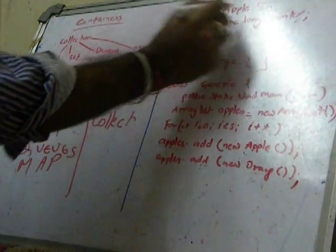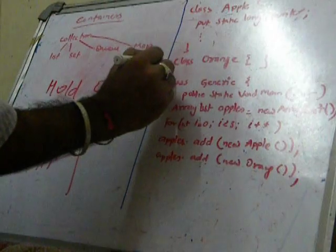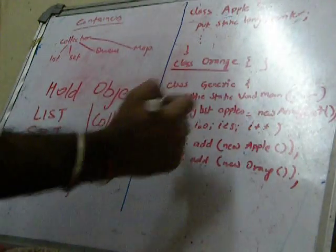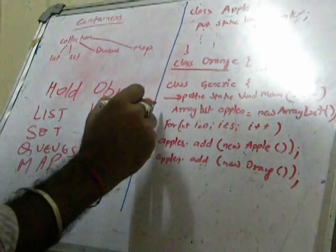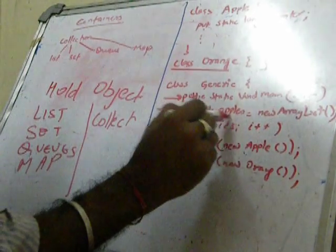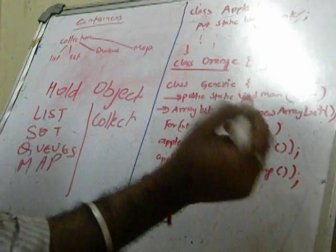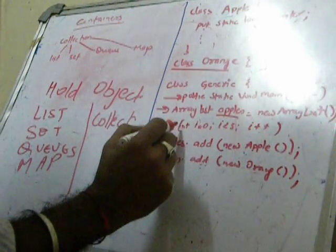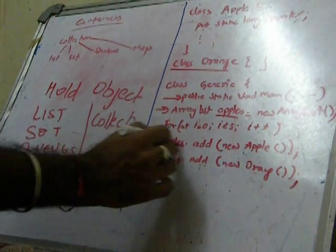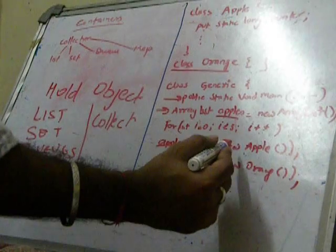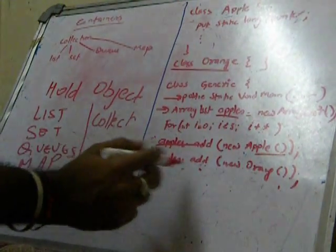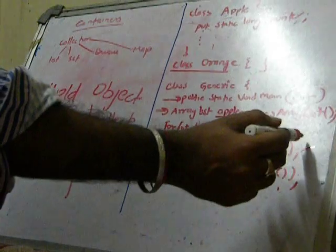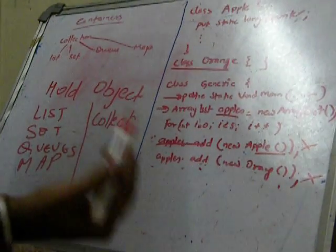I have a class called class Apple with some declarations, then class Orange with no declaration inside that, and there's a third class without generic. In this class I have my main, I'm declaring an ArrayList, ArrayList apples equals new ArrayList. Now for i 0 to 3 apples dot add new Apple, apples dot add new Orange. So I basically in this ArrayList object am adding the object of class Apple and object of class Orange.